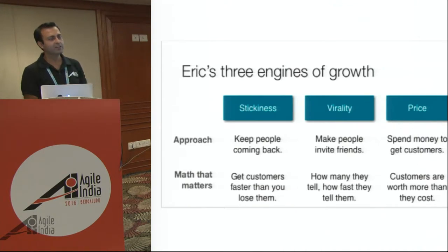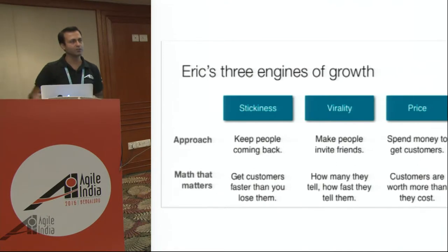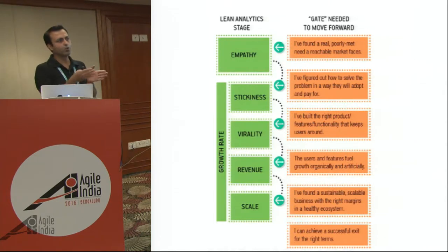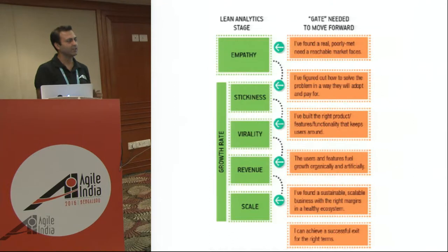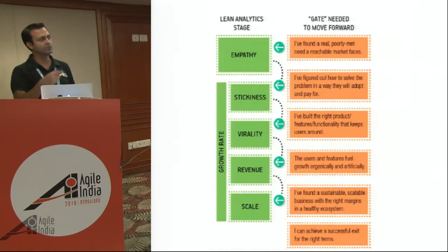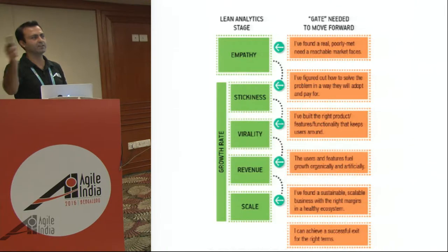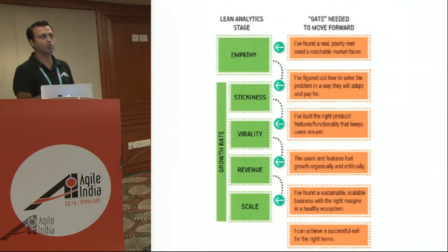Once you have a sticky base, you figure out how to get to the next level — how do you make it go viral, do growth hacks so more and more users start coming in. And then you go to the price engine, where you start making some revenue. More or less the sequence is simple: first figure out your initial set of customers and make them really sticky. Once it's really sticky and you figure out people are really using it, then you figure out how to make it viral — how do they refer friends and family. And once you're there, you start figuring out how to monetize and scale.